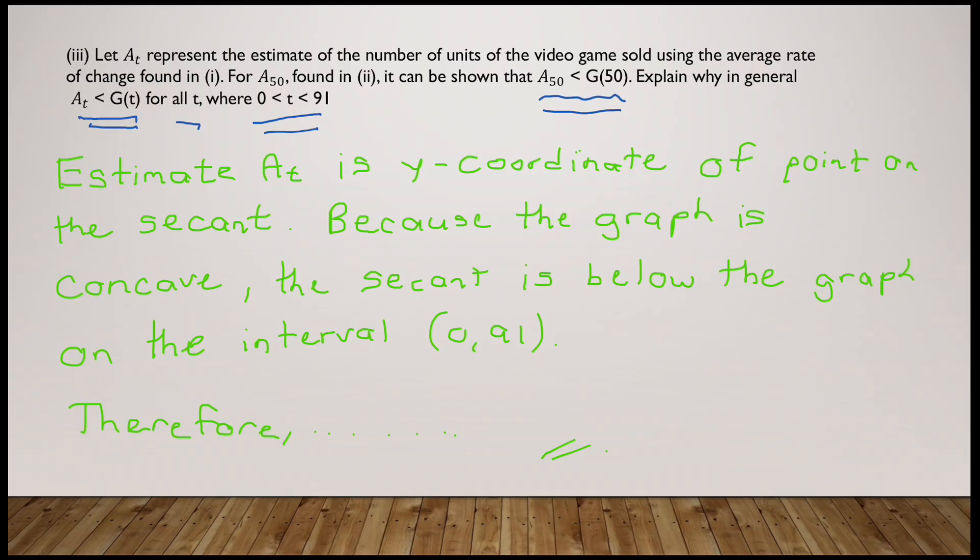Now I will show you how you can actually write your answer. I've written it already. We go like: the estimate A(t) is the y coordinate of a point on the secant. Now because the graph is concave, we have to mention the keywords. The keywords here would be secant, because the graph is concave. The secant is below the graph on the interval. It is by the definition of a concave graph that we know that if the secant line is below the graph, then it is a concave graph. And yeah, the secant is below the graph on the interval 0 to 91. Therefore, in general, it is less than G(t) for all t belonging to the interval 0 to 91. Let's move on to the third and final part.